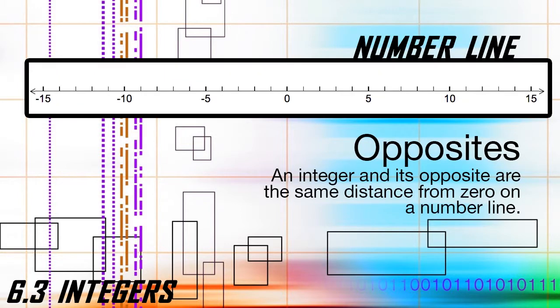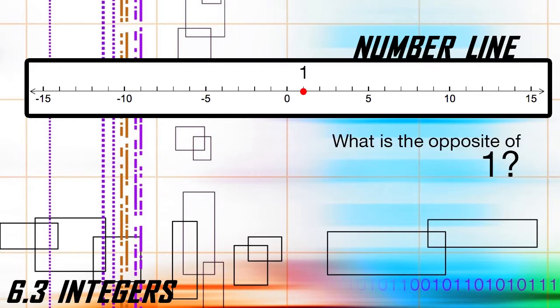When we ask what is the opposite of one, we are saying what integer is the same distance from zero, just in the opposite direction. Step one, plot the integer on the number line. Step two, count the units back to zero — this is how many units you count to find the opposite. Step three, go to zero. Step four, count the units in the opposite direction to the new integer. In this case, the opposite of one is negative one.